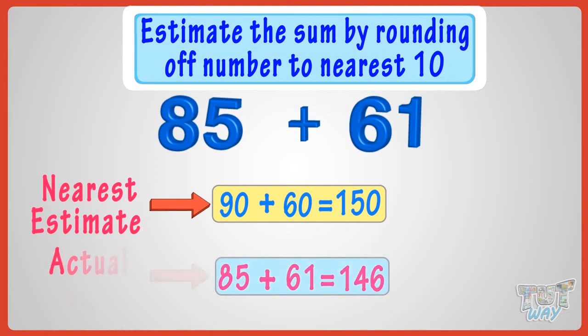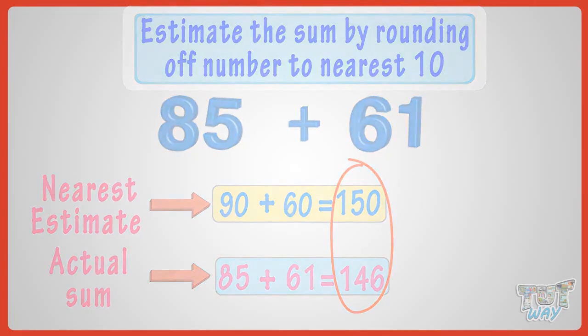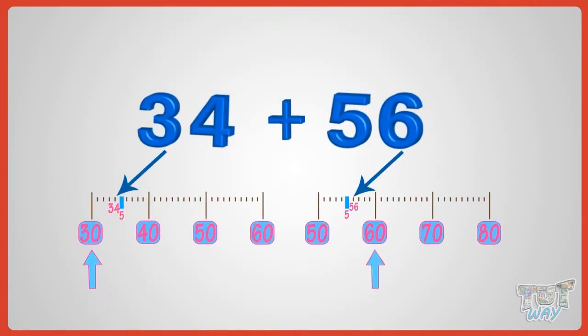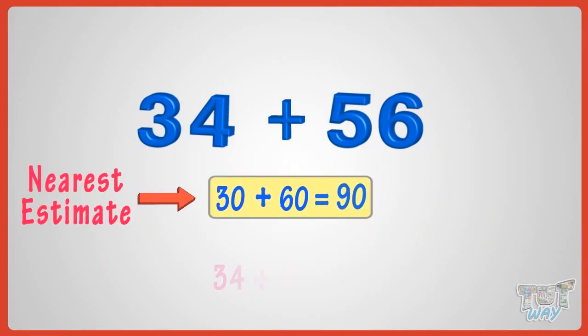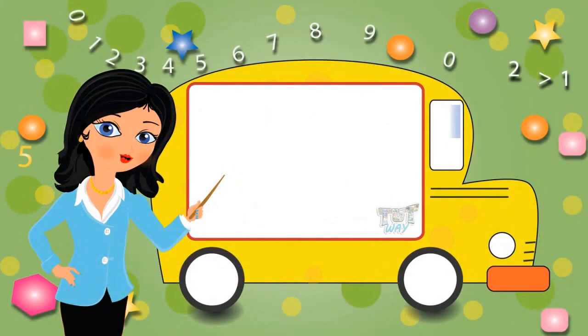So, your estimate is very near. So, what have we learned? We have learned to make rough estimates by rounding off the numbers. It helps us in fast calculations when necessary. Now, you may go ahead and take a quiz to practice more. Bye-bye!